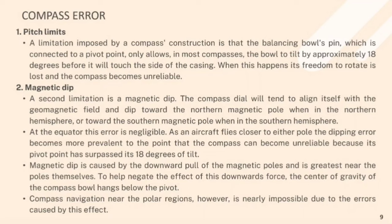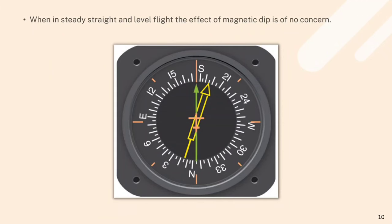The downward force causes the center of gravity of the compass to hang below the pivot. Compass navigation near the polar regions is nearly impossible due to the errors caused by this effect. When in steady straight and level flight, the effect of magnetic dip is of no concern.